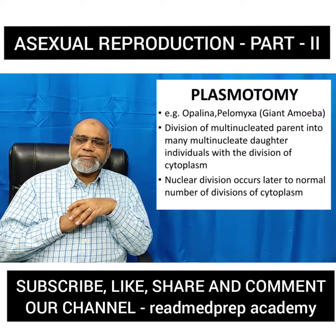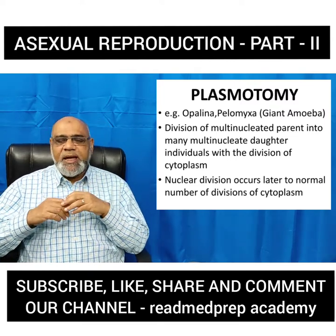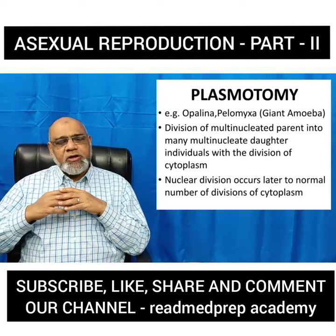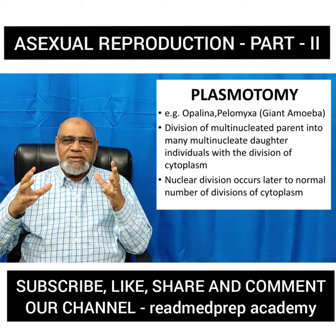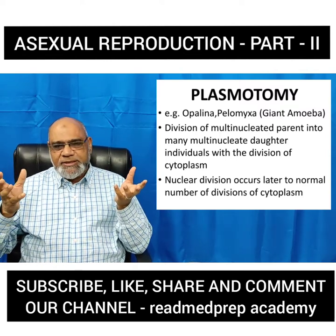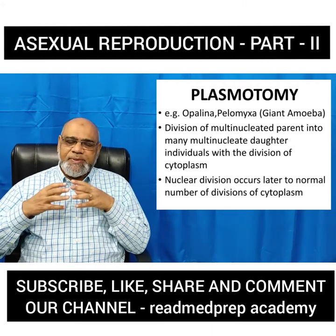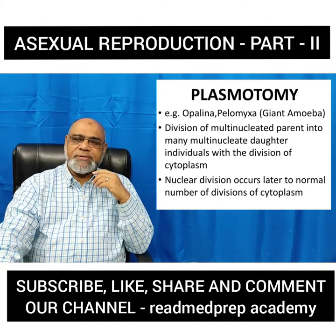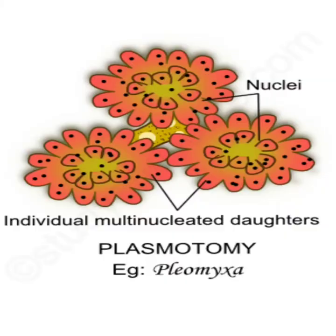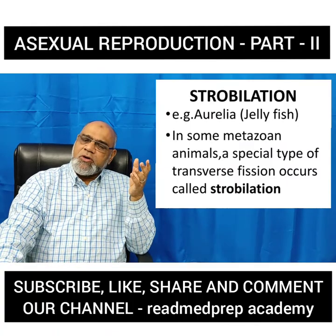What is plasmatomy? In animals like opalina and pelomyxa, which is otherwise called the giant amoeba, there is division of the multi-nucleated parent into many multi-nucleated daughter individuals. Initially, the cytoplasm gets condensed according to the multiple divisions of the cytoplasm. The nuclear division occurs later depending upon the number of divisions of the cytoplasm, and new individuals are formed.